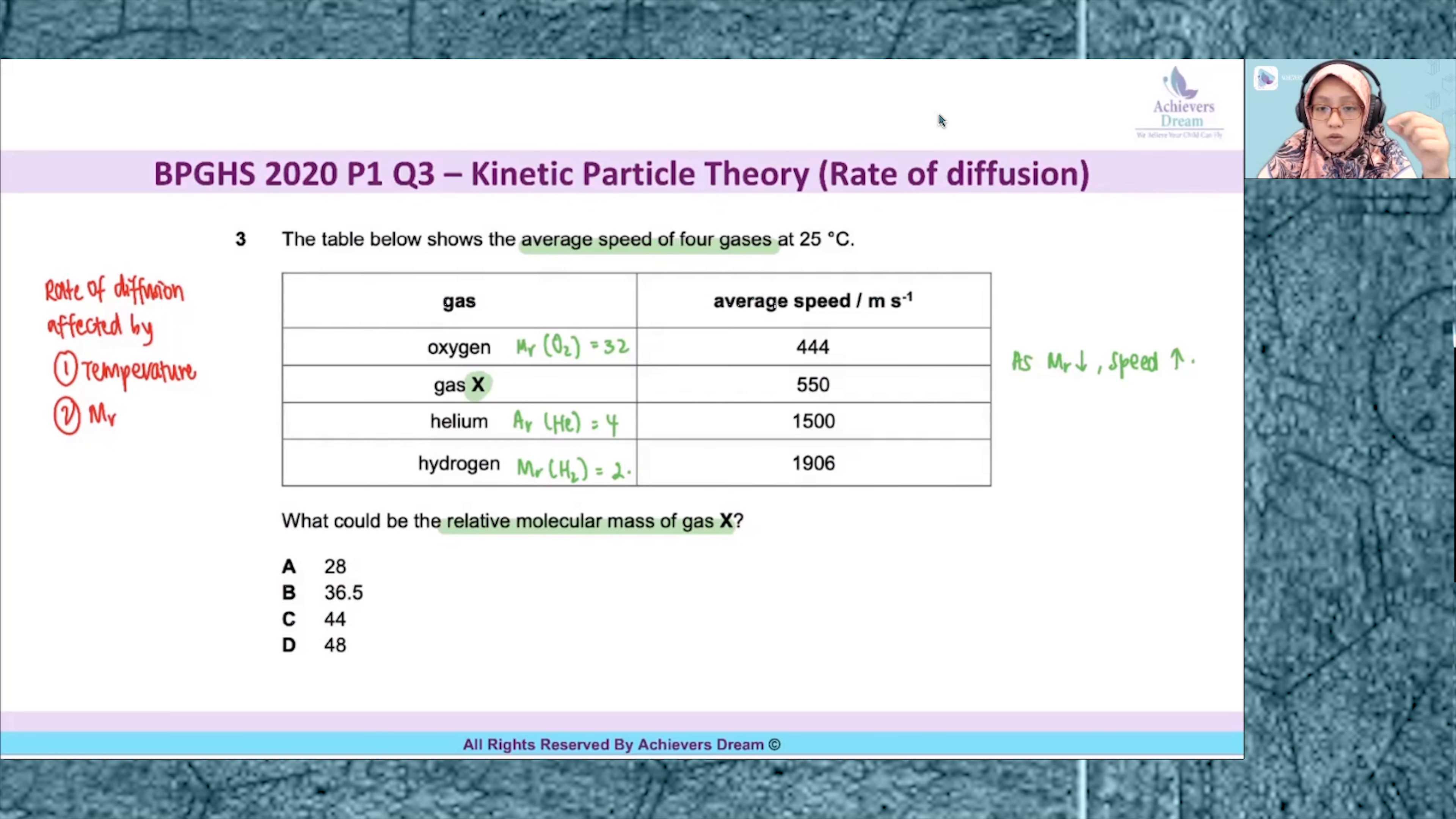What's the difference between oxygen and gas X? You realize that X has a higher speed than O2. Based on the trend we observe, for speed to increase the Mr must be lower. So you can conclude that gas X has a lower Mr than oxygen.